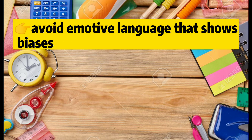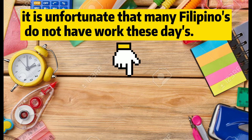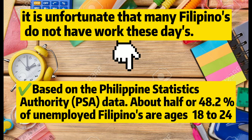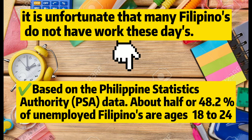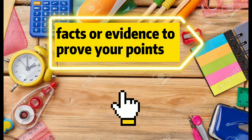Avoid emotive language that shows biases. For example: 'It is unfortunate that many Filipinos do not have work these days.' Therefore it should be: 'Based on the Philippine Statistics Authority (PSA) data, about half or 48.2% of unemployed Filipinos are ages 18 to 24.' Include facts or evidence to prove your points rather than using emotional language.